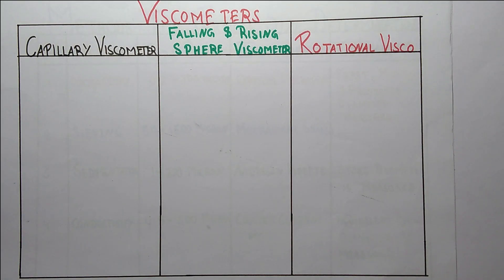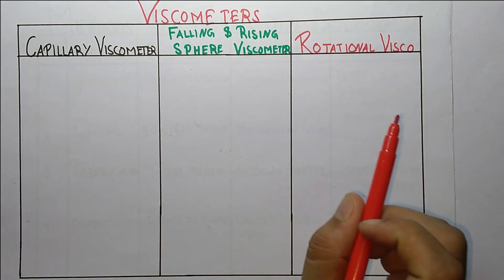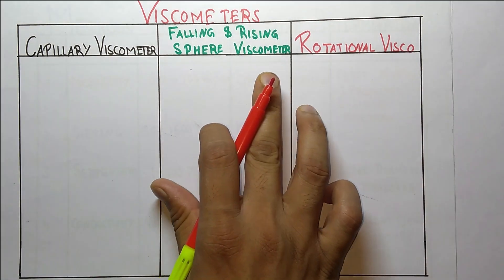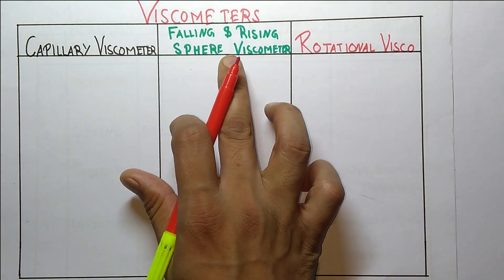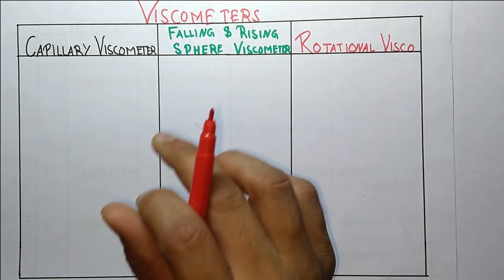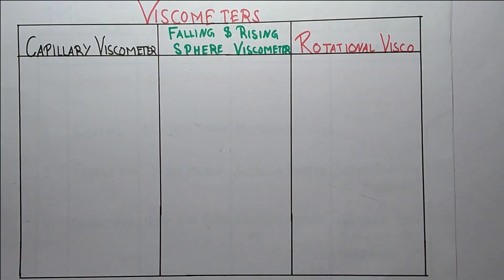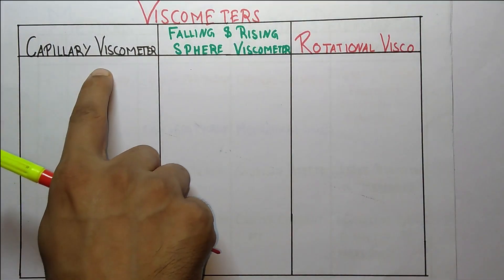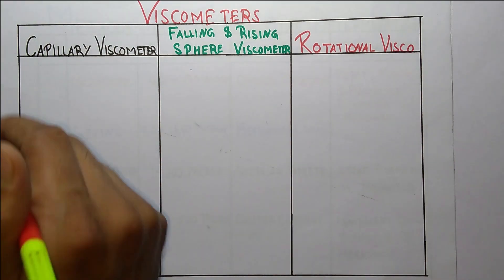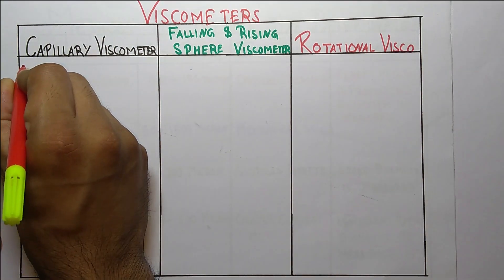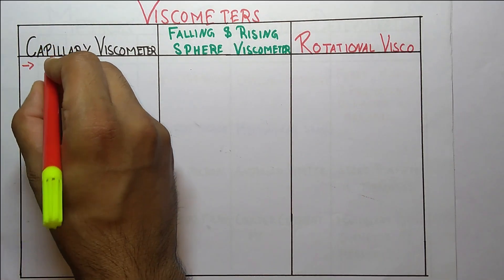Hello students, welcome to the channel Pharma4U. Today in this video we are going to discuss the types of viscometers. As the name indicates, viscometers are used to measure the viscosity of fluids. First, coming to the capillary viscometer — capillary viscometers are used for the measurement of Newtonian fluids.